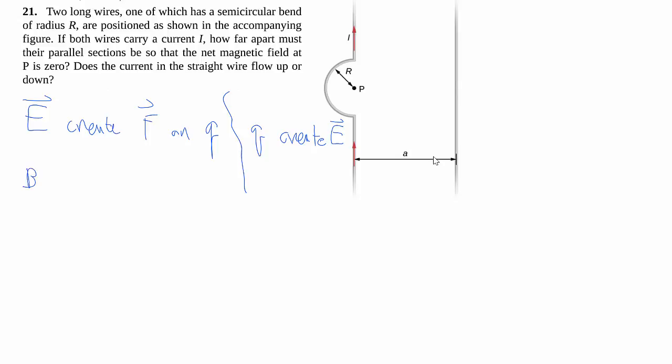In the last chapter, we dealt with how the magnetic field creates forces on a moving charge in the form of F equals QV cross B. So you might also imagine that a moving charge also creates magnetic field. And in fact, it does.